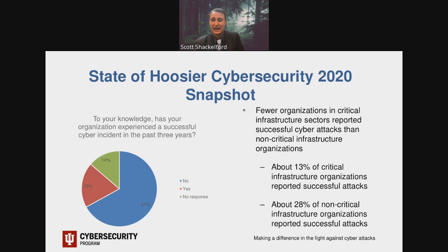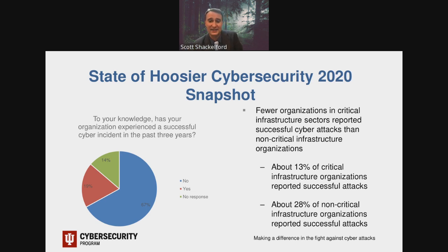The survey found some interesting results — classic good news, bad news. On the good slash disturbing side, 95% of organizations surveyed were either somewhat or very concerned about cyber risks. There was a bifurcation between critical and non-critical infrastructure organizations, with those in a critical infrastructure context reporting fewer cyber attacks successfully penetrating their networks than those that weren't. This could be some combination of factors, including access to the ISACs, different regulatory requirements, and compliance frameworks.